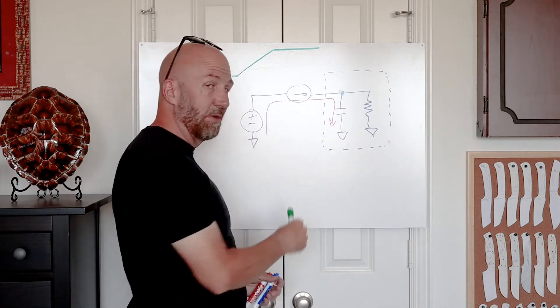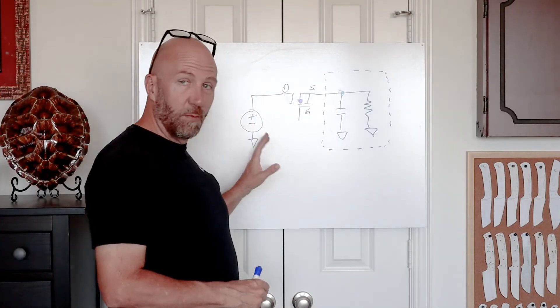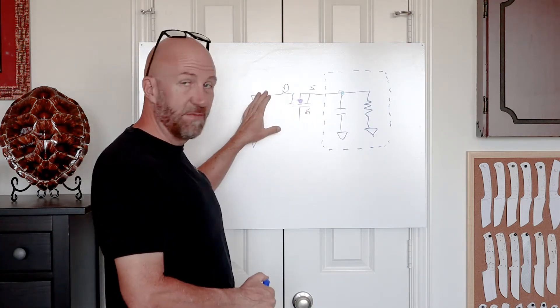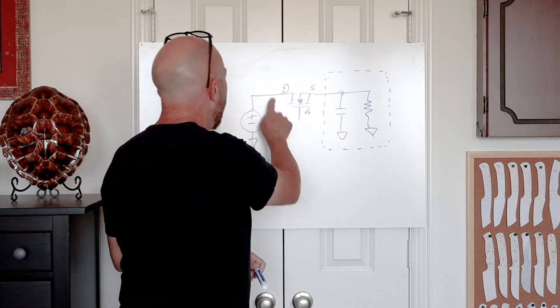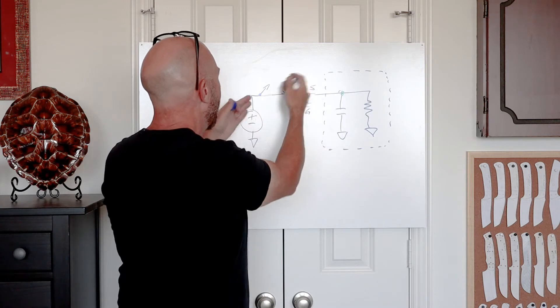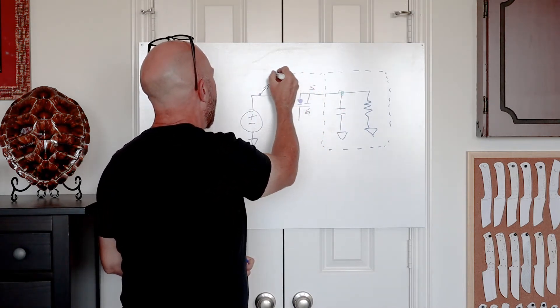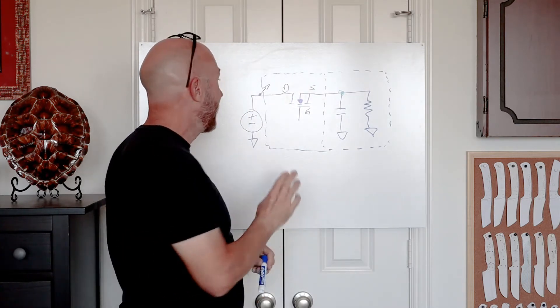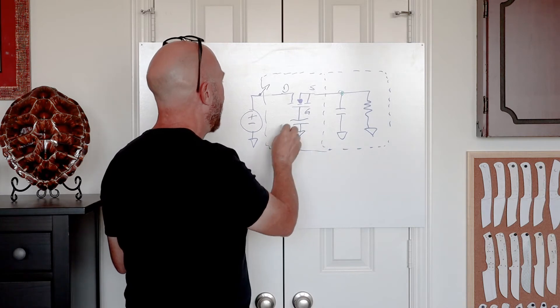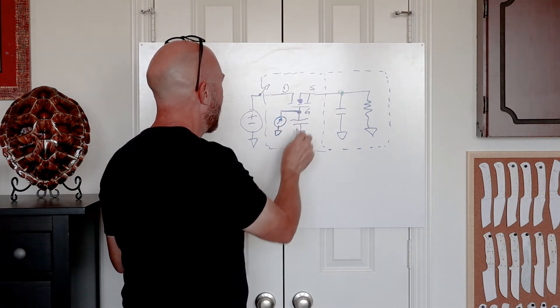The way we typically solve the hot swap problem and create a controlled turn-on is by placing a power element, a MOSFET, in series with the supply to the load. There would still be a switch which is the connector. We have a hot swap switch either upstream on the backplane or in the load itself. We put a capacitor at the gate of the FET referenced to ground, and energize that with a current source, a very small current source that will pull up the gate slowly.